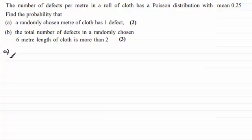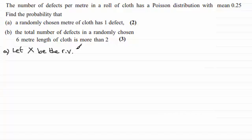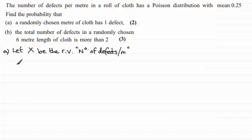Okay, welcome back. For part A, what we need to do is define a random variable for the Poisson distribution with a mean of 0.25. We can use any letter — I'm going to use X. Make sure it's a capital letter for random variables. Let X be the random variable (RV for short) representing the number of defects per meter. X is distributed as a Poisson distribution with mean 0.25.